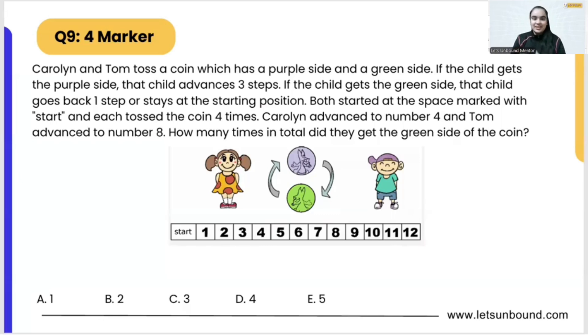The question is: Caroline and Tom toss a coin which has a purple side and a green side. We can see over here there is a coin which is having a purple side and a green side.